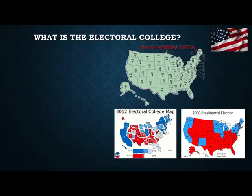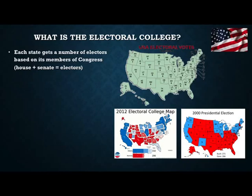The Electoral College is something most Americans don't understand particularly well. Every state is given electors for president, and that number equals however many members of the House and Senate that state has. For example, Oregon has five members of the House and two senators, giving it seven electoral votes. California has 53 House members and two senators, giving it 55 electoral votes — by far the largest of any state. Texas comes in second at 34, Florida third at 27, and New York is now at 31.